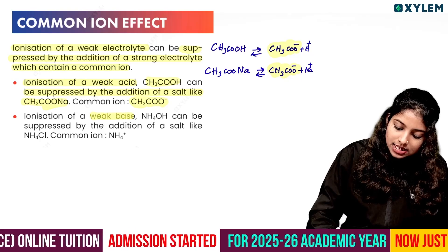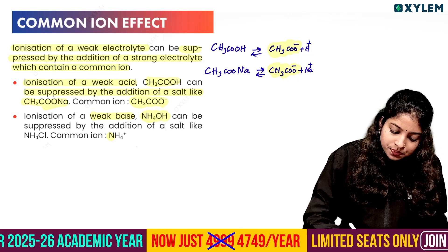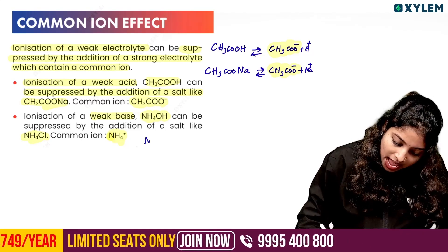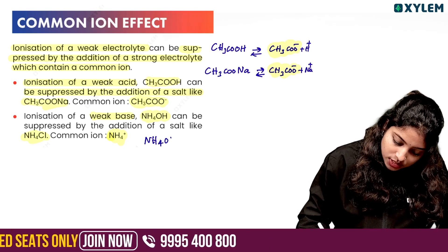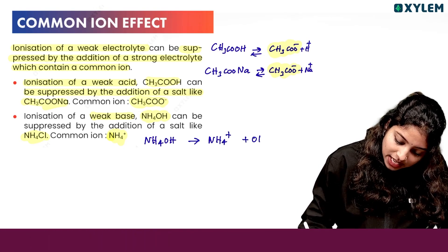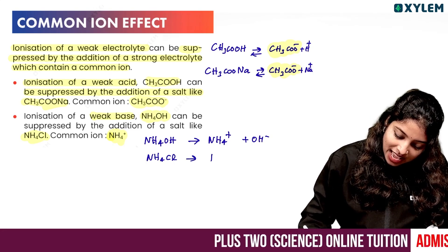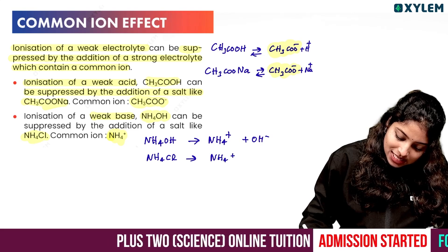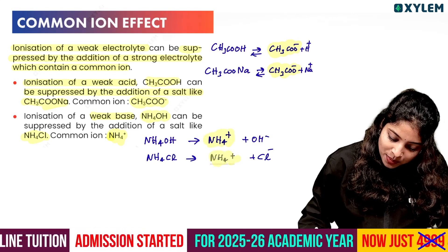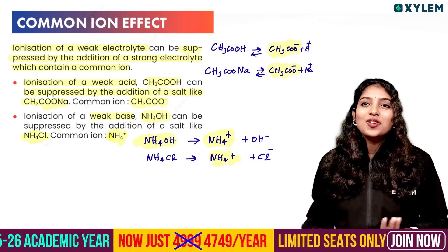For example, let's talk about NH4OH. NH4OH dissociates to give NH4⁺ and OH⁻. And NH4Cl dissociates to give NH4⁺ and Cl⁻. If you have a common ion like NH4⁺, it suppresses the dissociation. This is the Common Ion Effect.